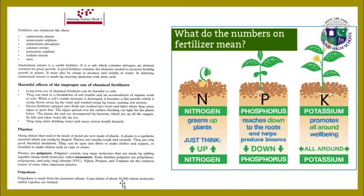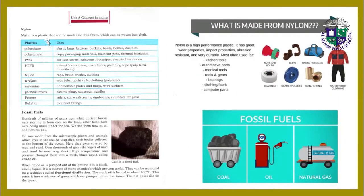Polythene is made from the monomer ethene — long chains of about 50,000 ethene molecules added together are formed. Regarding fertilizer numbers: nitrogen grows the plants, phosphorus reaches down to the roots and helps produce blooms, and potassium promotes all-around well-being of a plant. Nylon is a plastic that can be made into thin fibers which can be woven into cloth. Here we have the list of some plastics and their uses.